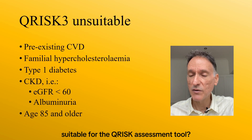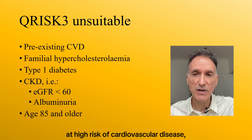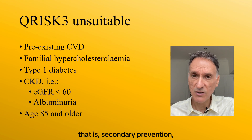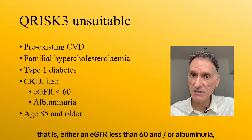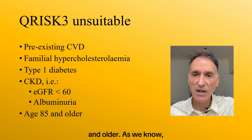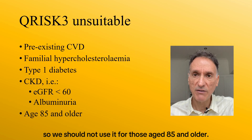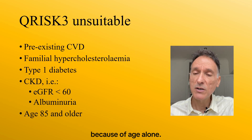Who is not suitable for the QRISK assessment tool? We should not use it for those already at high risk of cardiovascular disease, including people with pre-existing cardiovascular disease — that is, secondary prevention — familial hypercholesterolaemia, type 1 diabetes, CKD (that is, eGFR less than 60 and/or albuminuria), and those aged 85 and older. Instead, those aged 85 and older should be considered at increased risk of cardiovascular disease because of age alone.